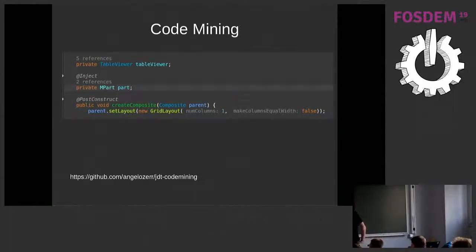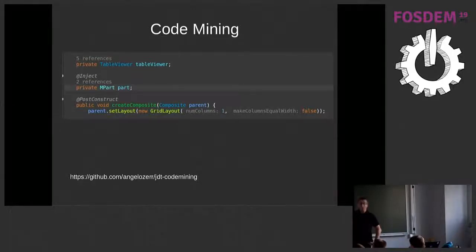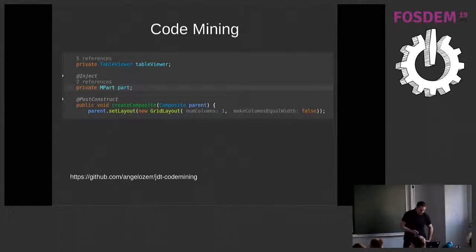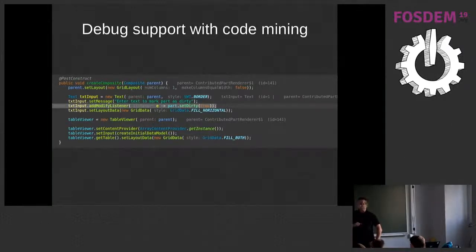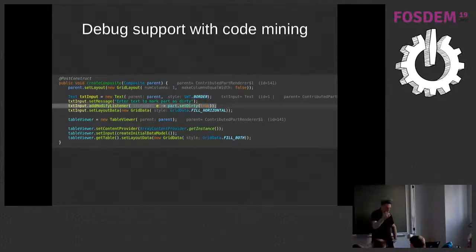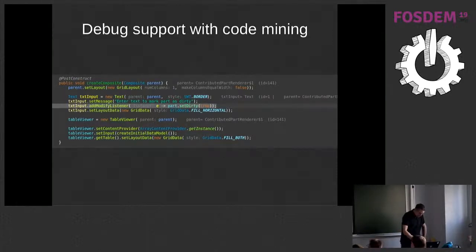We also have Angelo Zerr working on more things — for example, a feature from IntelliJ. IntelliJ by default shows you the parameter names for any calls. This is also available for Eclipse via code mining. So if you have no idea how GridLayout works, you can enable it and it tells you the name of the parameter — for example 'numColumns' — giving you more information. My favorite feature in IntelliJ is the debug feature that shows debug information inline while you're debugging instead of using the variable view. This is also available via Angelo's plugin, where you see the value of the toString method of the element you're debugging, directly in the text editor.